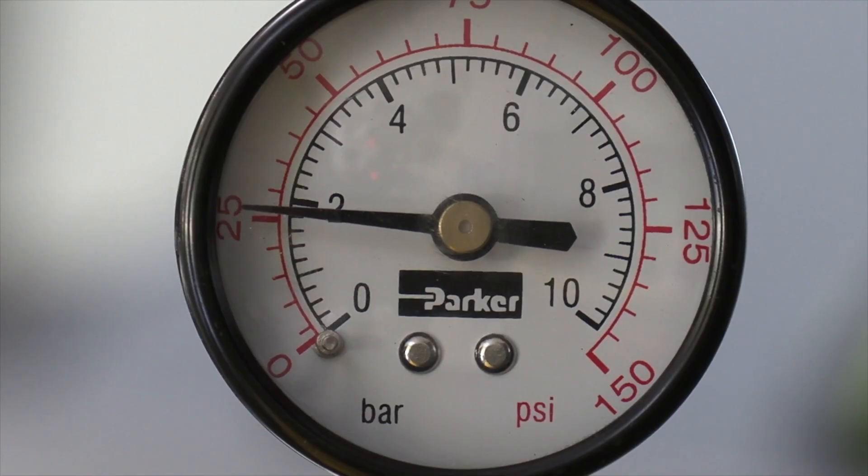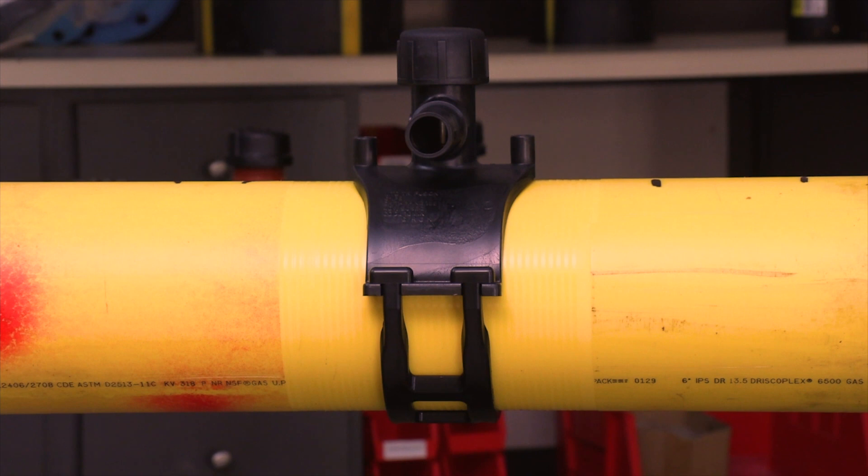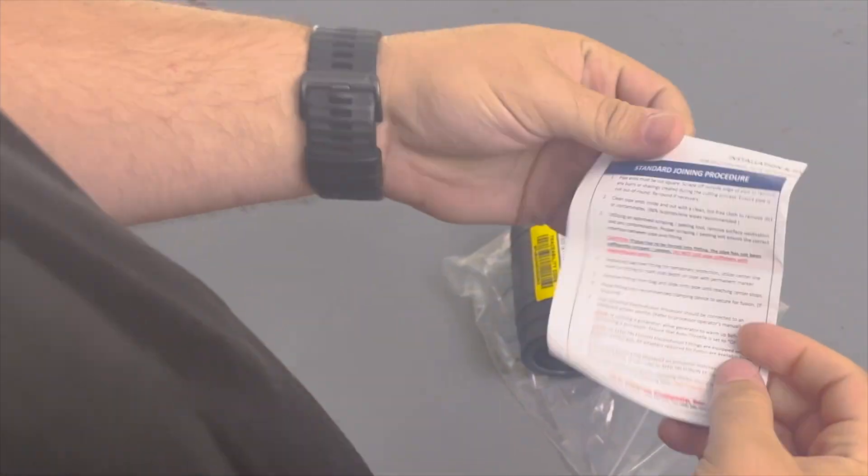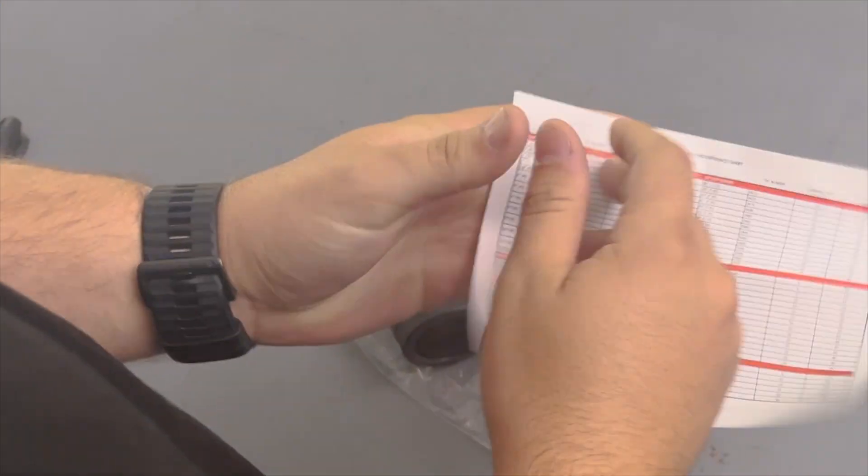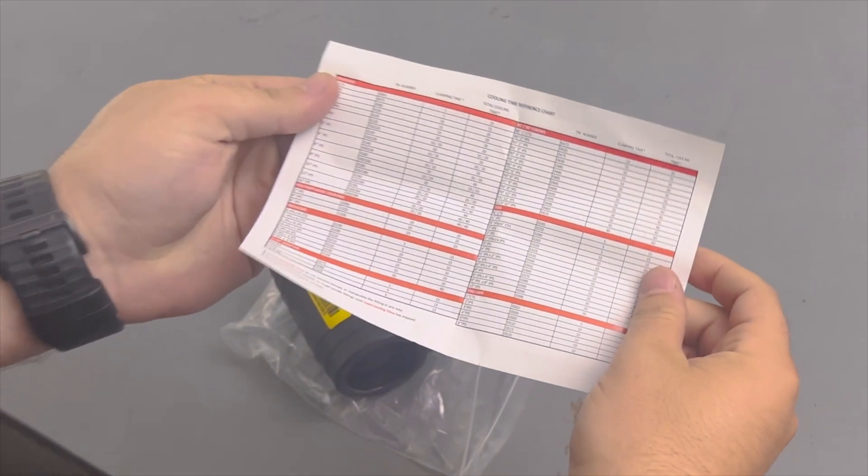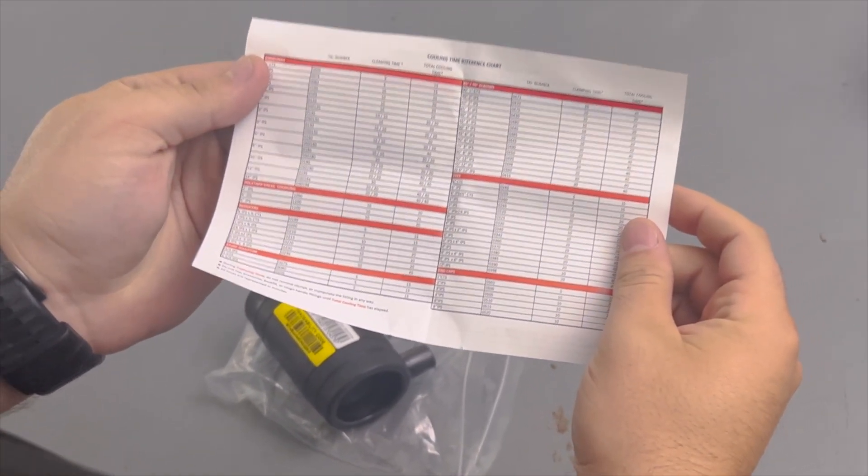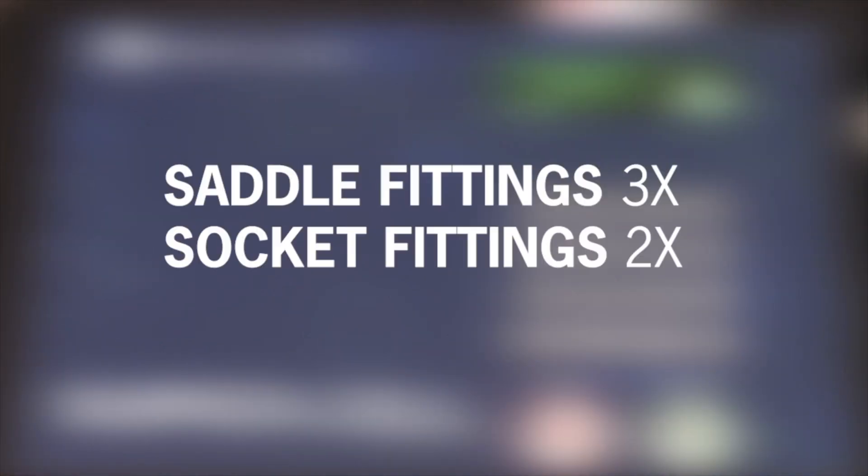With all MTD saddle fittings, the integrated under clamp does not require removal and can be buried with the fitting. Clamping and rough handling times are listed on the instruction sheet included with every MTD fitting. A shorthand practice, and an option if the insert is missing or can't be read, is for saddle fittings triple the time on the label, and for socket fittings double it.